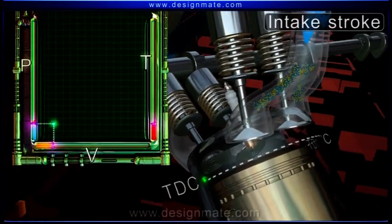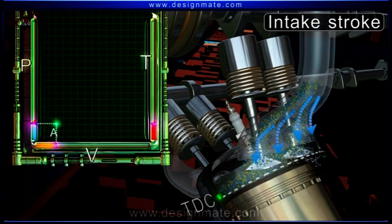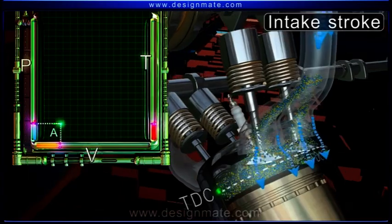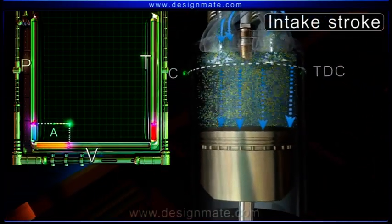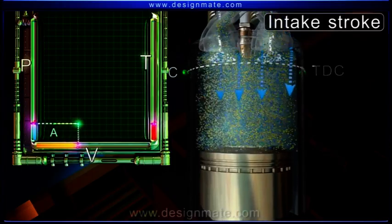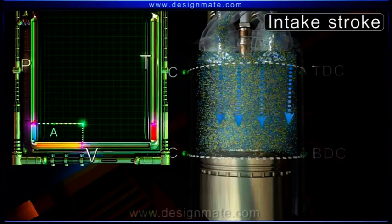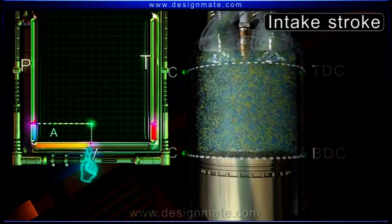Intake stroke. During this stroke, the intake valves open and the fuel-air mixture, called charge, enters the cylinder at near atmospheric pressure. The piston descends from TDC towards the bottom dead center or BDC of the cylinder, and the volume of charge increases.